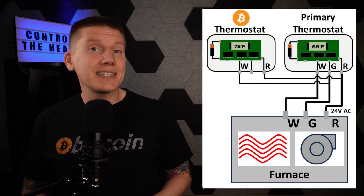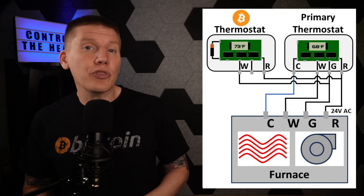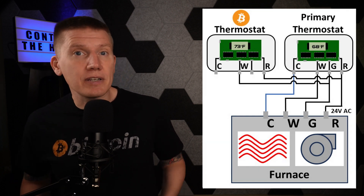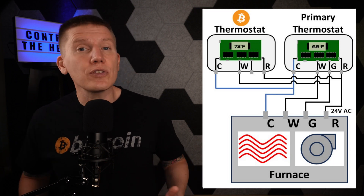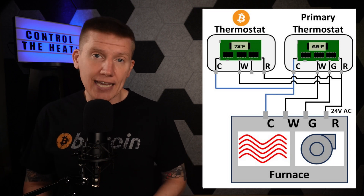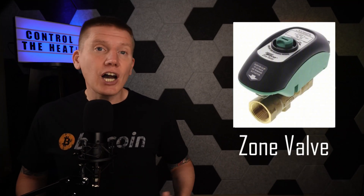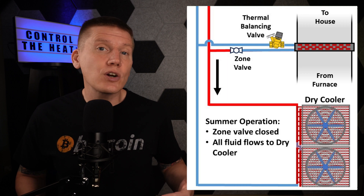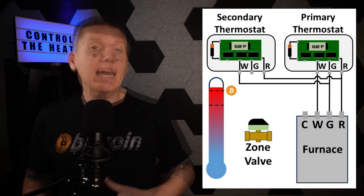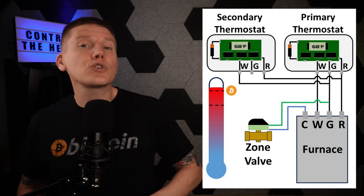Adding a little more complexity: if your existing thermostat is not battery-operated and you want the Bitcoin thermostat also not to be battery-operated, all that is needed is to add a third wire connecting the C terminals between the two thermostats and everything else will work the same. Next up is adding a zone valve to this setup. As I covered in a past episode, a zone valve is a great idea since it can prevent hot fluid from passing through the radiator when heat isn't needed or wanted. The only small change needed is to wire the G terminal from the furnace to one side of the valve and the C terminal to the other side.